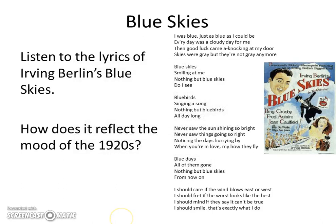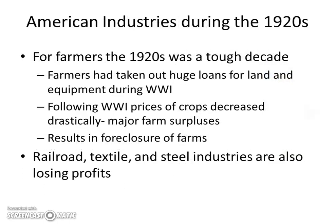If you listen to the lyrics of Irving Berlin's 'Blue Skies,' you can see that it really reflects the mood of the 1920s: 'I was blue, just as blue as I could be. Every day was a cloudy day for me. Then good luck came a-knocking on my door. Skies weren't gray, but they're not gray anymore.' It really epitomizes that happy-go-lucky mood of the 1920s.